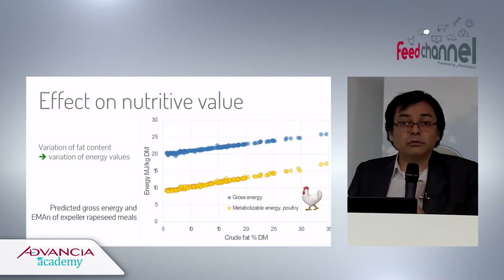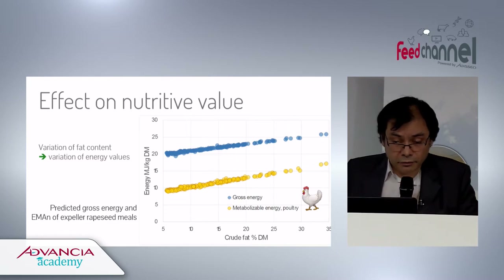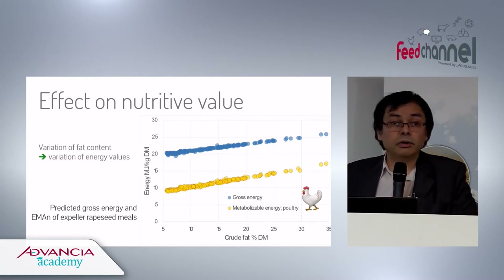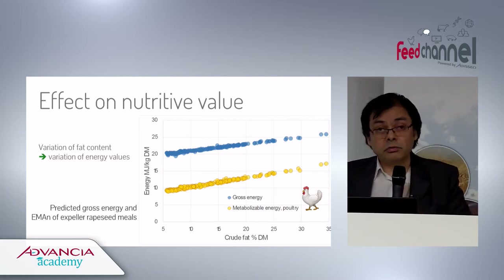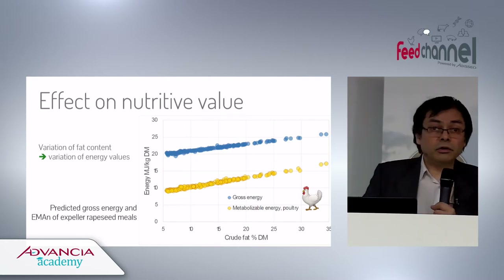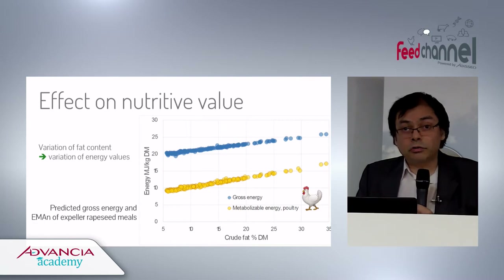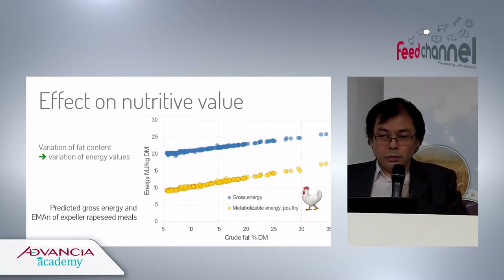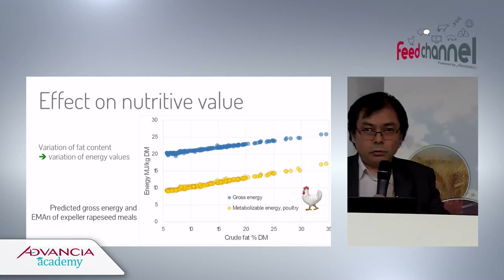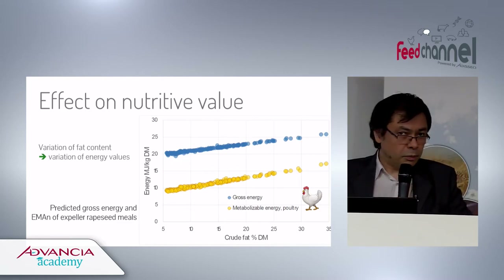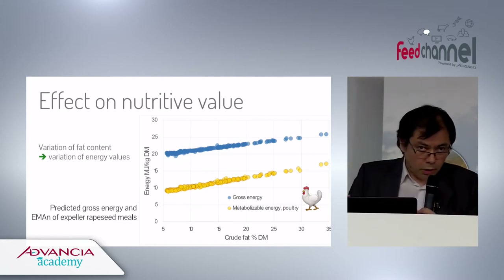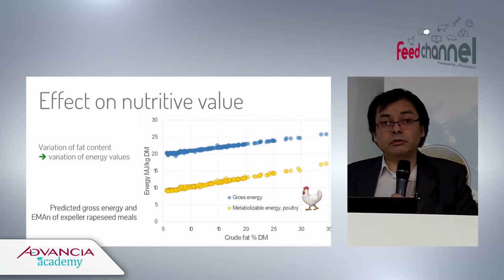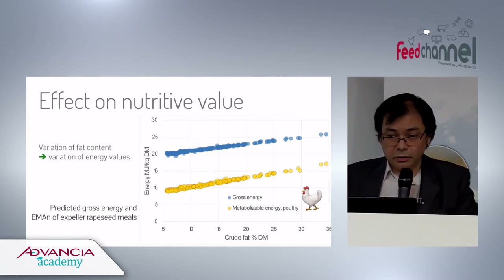Similarly, fat content brings energy. For an expeller rapeseed meal, oil content can range from 5% to 20% — a very large variation that has a direct effect on gross energy and metabolizable energy. When working with expeller soybean or rapeseed meal, the precise fat content must be taken into account because it has a very direct effect on nutritional value.